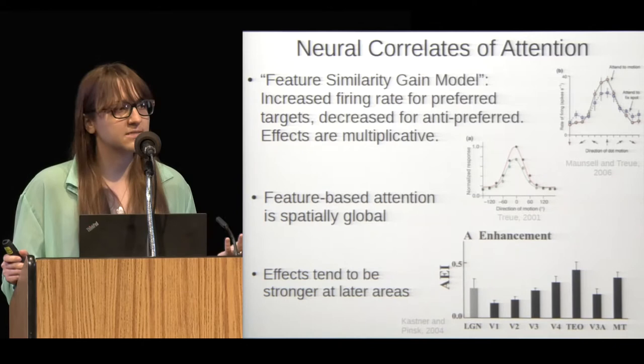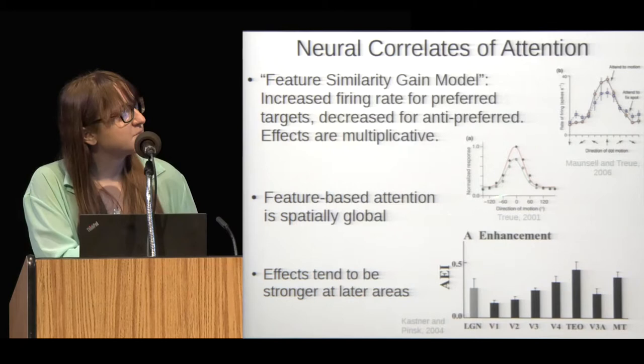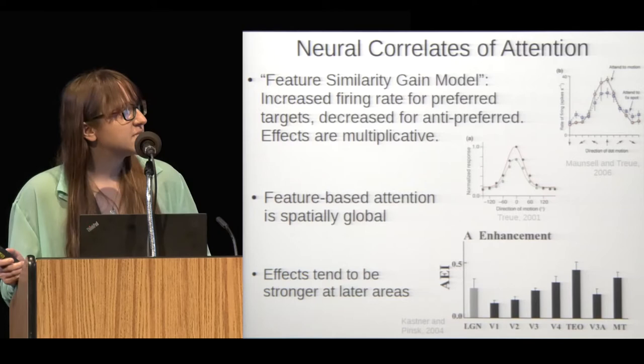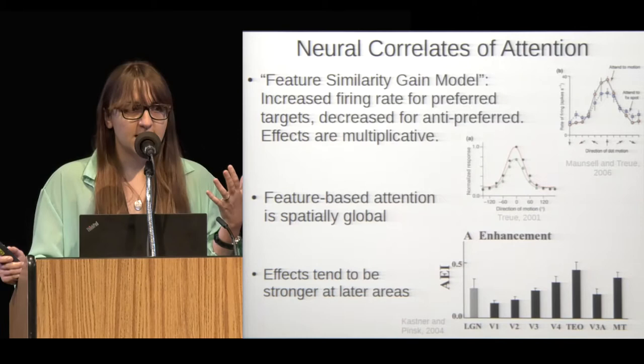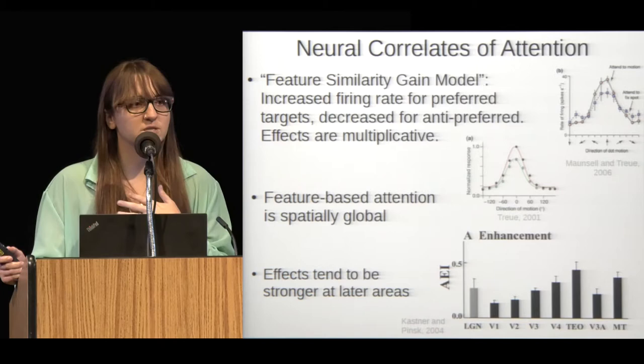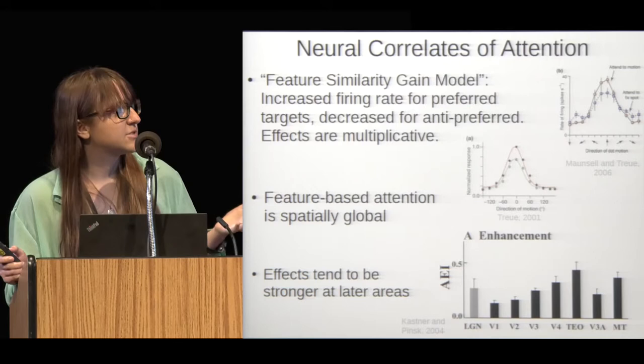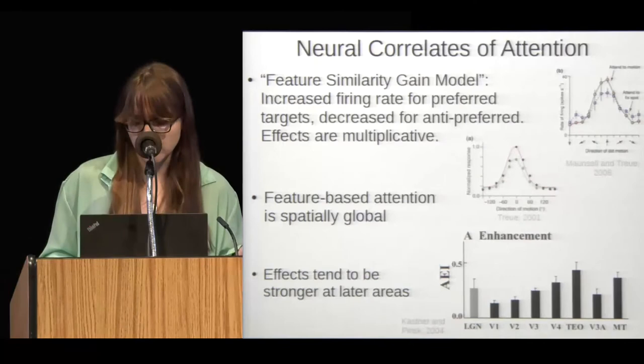Within that, the effect is multiplicative — if you are attending to a preferred feature, the response to all different stimuli will be scaled up multiplicatively. Another neural correlate of feature-based attention is that it's spatially global, meaning that even if the feature attention task is happening in a particular location in the visual field, neurons that respond to that feature will be modulated across the visual field. These effects also tend to be stronger at later areas — neurons in V4, for example, show stronger attentional modulation than neurons in V1.